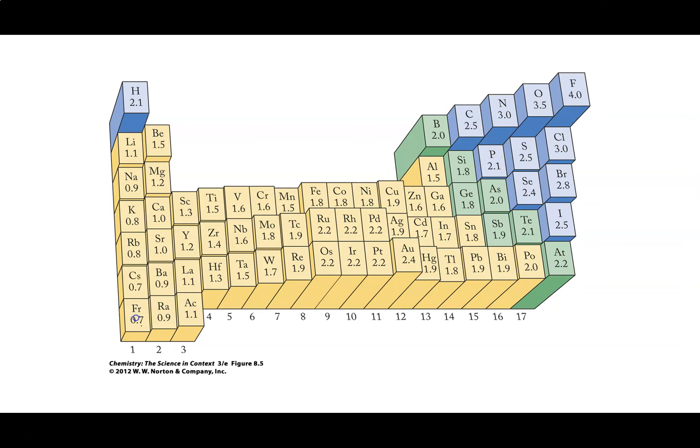You can always have a table of electronegativity values available to you during any testing when we're doing online tests and quizzes. And of course you may have recognized already that if you have a TI-84 color edition within the periodic table, it actually gives you electronegativity values.